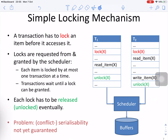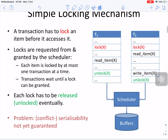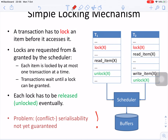The simple lock mechanism requires a transaction to lock an item before accessing it. Lock requests are granted by the scheduler, each item is locked at most once at a time, transactions wait until a lock is granted, and each lock must eventually be released. The problem is that serializability is not guaranteed.